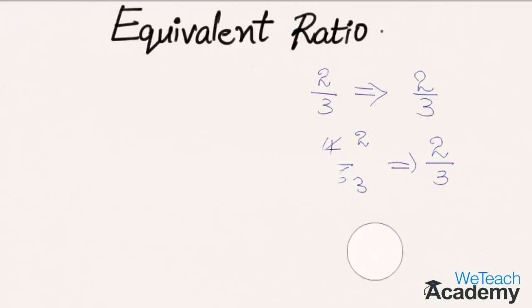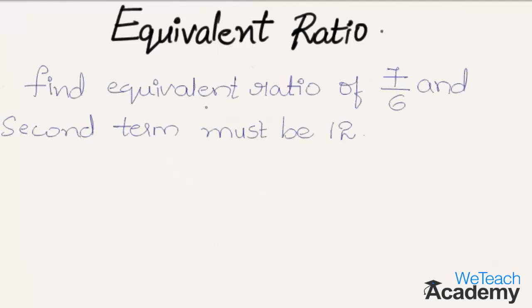These are the methods to find equivalent ratios. Now let us proceed and solve a problem using this concept of equivalent ratio. Here the given problem is to find equivalent ratio of 7 by 6 and the given condition is that the second term must be equal to 12.